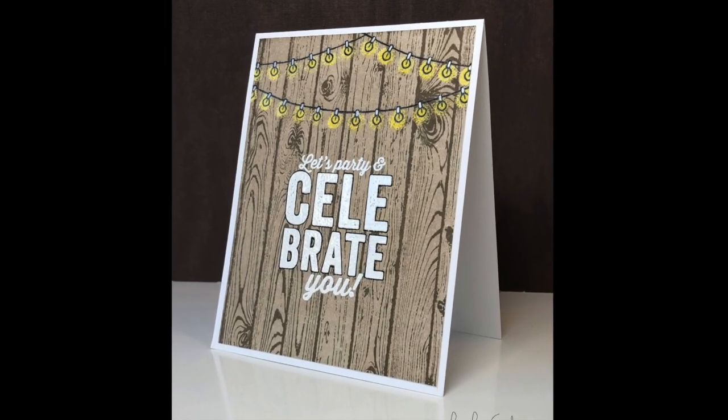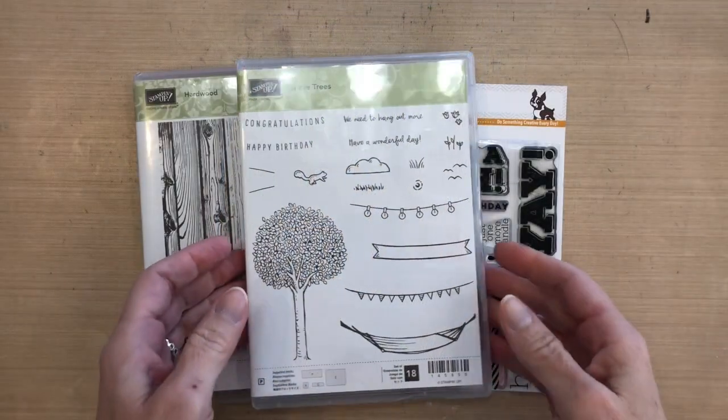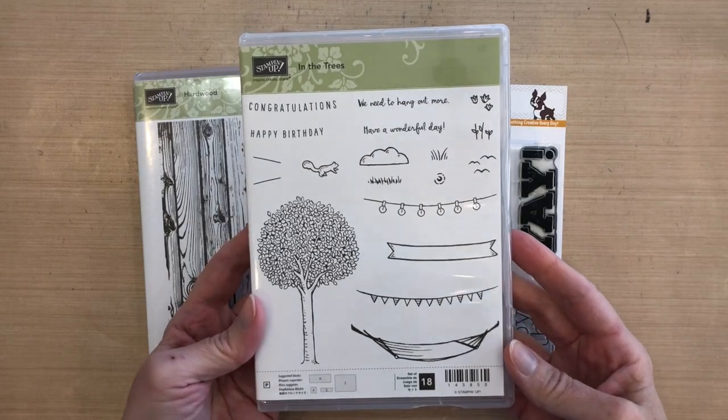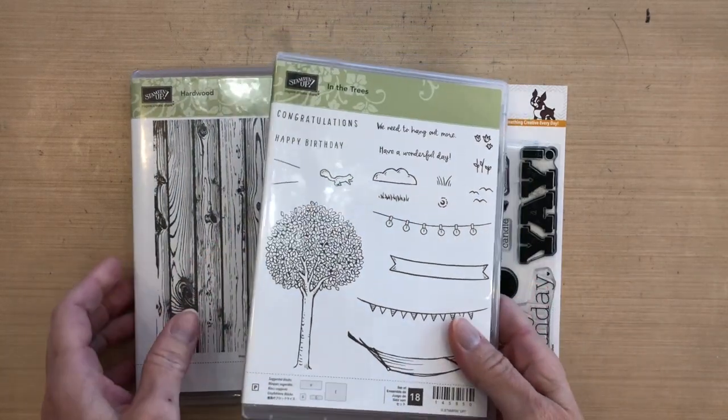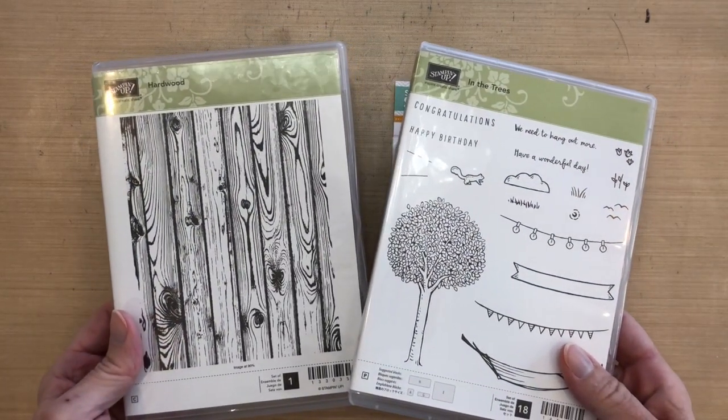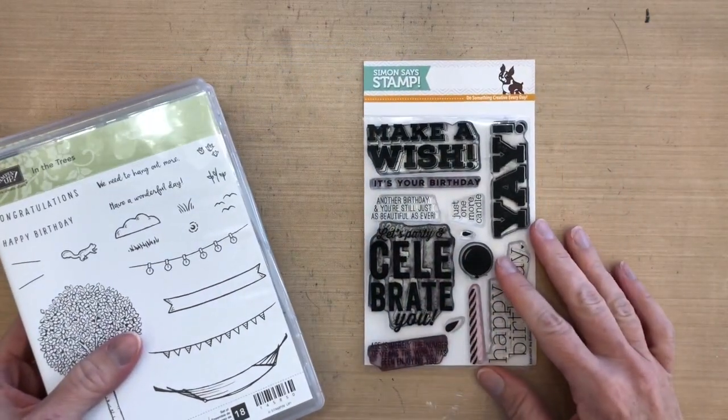Hi everyone, it's Darlene. Welcome back for another card video. Today's card uses this new In the Tree set by Stampin Up. I'm just using the string of lights. I've also got the hardwood background stamp and this Big Birthday Wishes set by Simon Says Stamp.